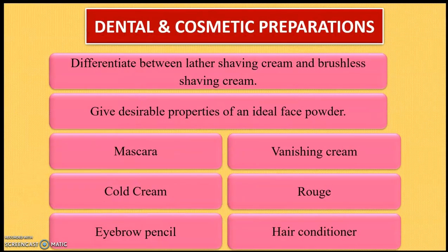The next important question is differentiate between, or compare and contrast, lather shaving cream and brushless shaving cream. Then, give desirable properties of an ideal face powder. Apart from that, some important definitions from the final exam point of view are: mascara, cold cream, eyebrow pencil, hair conditioner, rouge, and vanishing cream. As I told you in Part 1 video, whenever a definition is asked, you should back it up with examples — the same applies here.